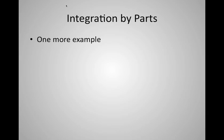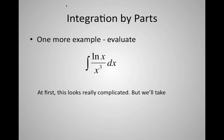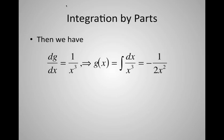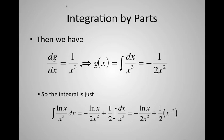Let's do one more example: the integral of log(x) over x cubed. That looks really complicated, but using integration by parts it's actually extremely simple. Take f to be log(x), because its derivative is simpler: df/dx = 1/x. Then dg/dx must be 1/x³. Integrating that gives g(x) = minus 1 over 2x². So the original integral equals minus log(x) over 2x², which is f times g, plus (1/2) times the integral of dx over x³.